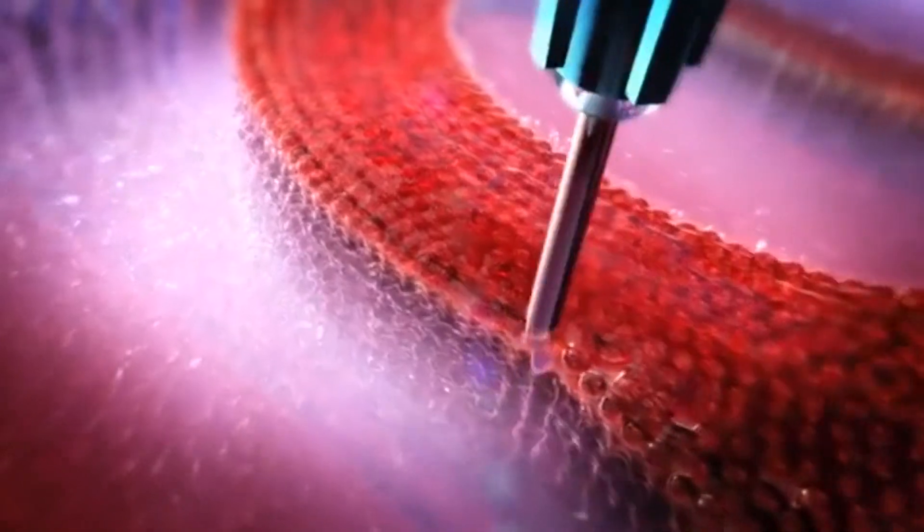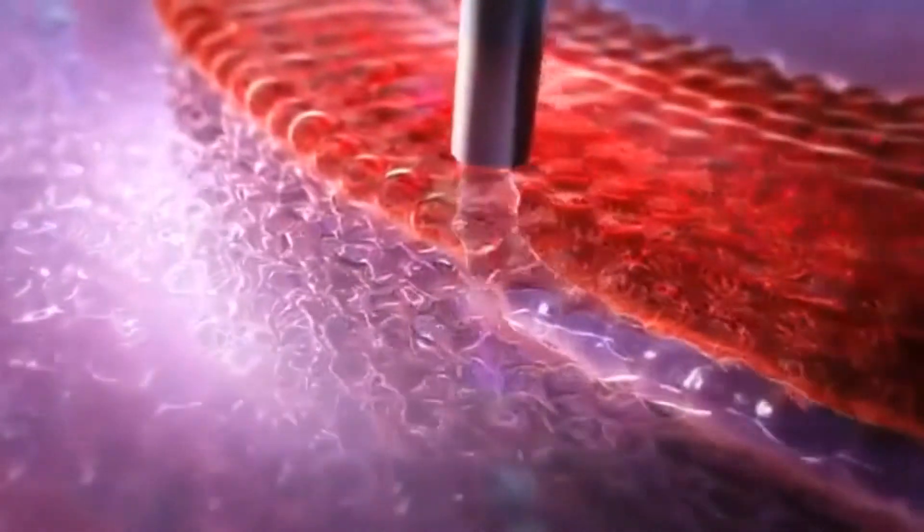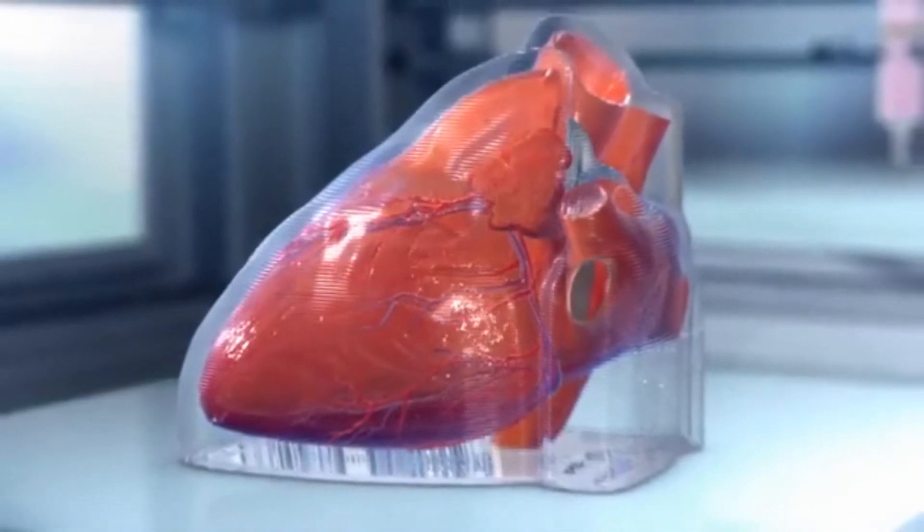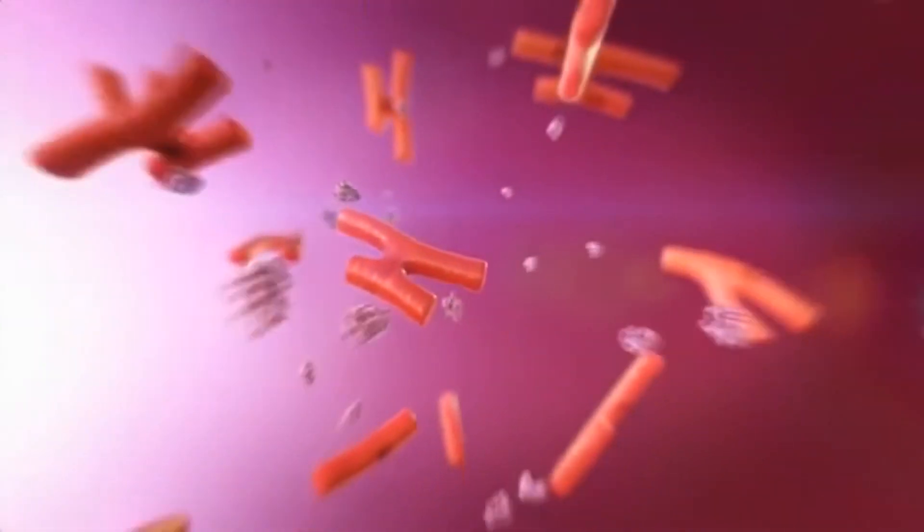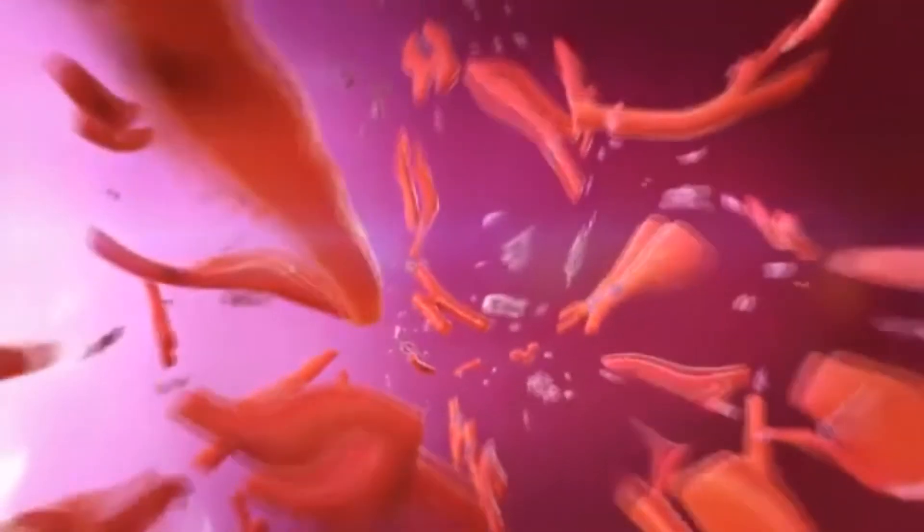At this stage, the cells have not yet fused, and therefore do not possess any mechanical strength. This is where the pluronic gel comes into play. Each layer of cells is surrounded by a mold of pluronic gel. This gel ensures the structure of the bioprinted layers.